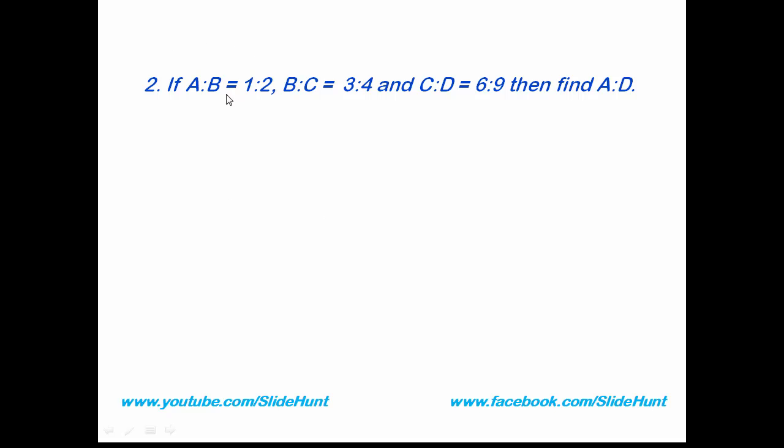Let's see how to solve it. First write the given ratios: A is to B equals 1 is to 2. We can write this ratio as A by B equals 1 by 2. Similarly, B by C equals 3 by 4, and C by D equals 6 by 9. We have to find A by D. We can write A by D equals A by B into B by C into C by D, because this B will cancel with this B, and this C will be cancelled with this C.